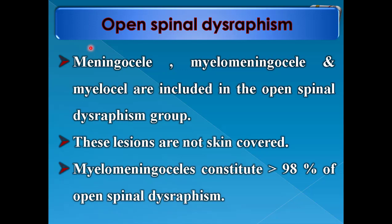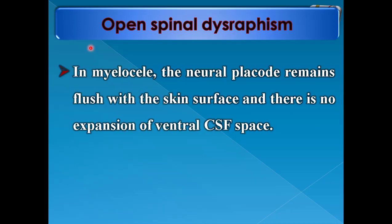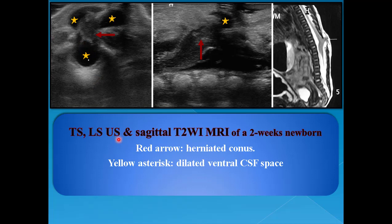Open spinal dysraphism: myelomeningocele, myelocele, and meningocele are included in the open spinal dysraphism group. These lesions are not skin covered. Myelomeningocele constitutes more than 98 percent of open spinal dysraphism cases. In myelomeningocele, an expansion of the ventral subarachnoid space displaces the neural placode dorsally, resulting in portions of spinal cord, nerve roots, and leptomeninges lying within the sac. In myelocele, the neural placode remains flush with the skin surface and there is no expansion of the ventral CSF space. On TS and LS ultrasound and sagittal T2 MRI of a two-week newborn, the red arrow denotes the herniated conus medullaris and the yellow asterisk denotes the dilated ventral CSF space.